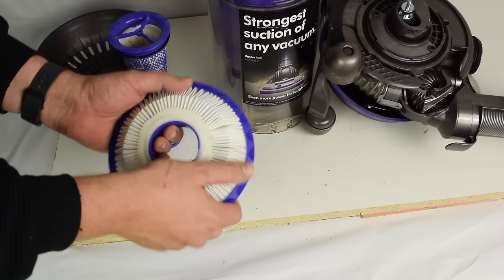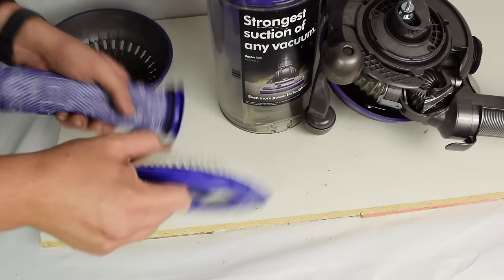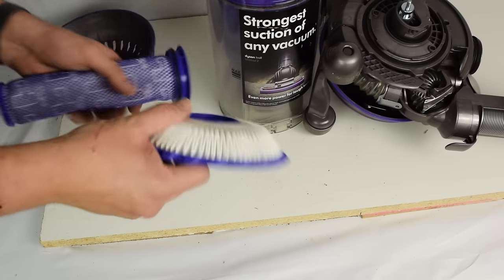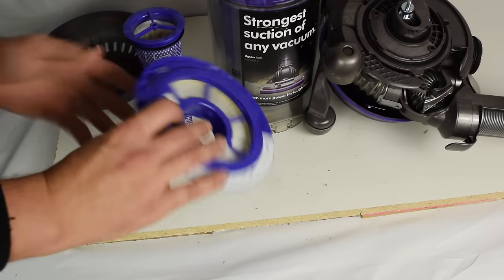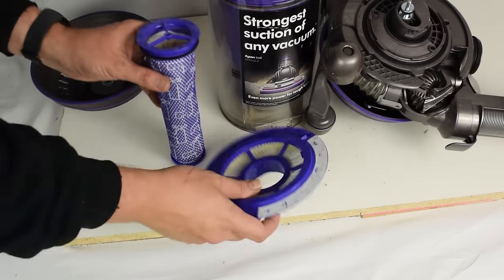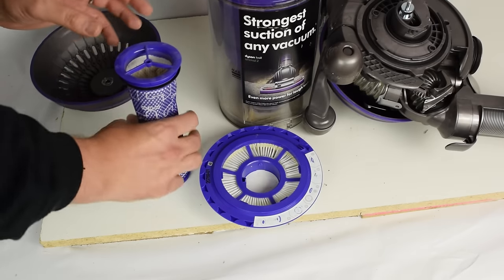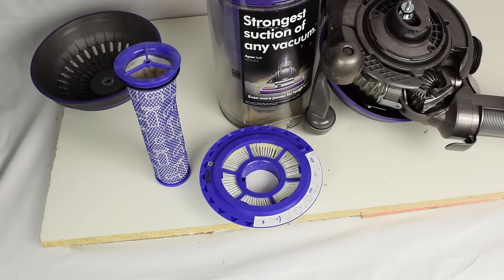With this one you don't do any squeezing or anything, you're just going to run water over it. But you do want to get all the debris out that you can in the trash can or whatever before you wash them. But yeah, with this one you don't squeeze it or anything, you just run the water over it. You need to let these sit for 24 hours and that's important because if they're still damp they can suck water into the vacuum motor and you don't want that.